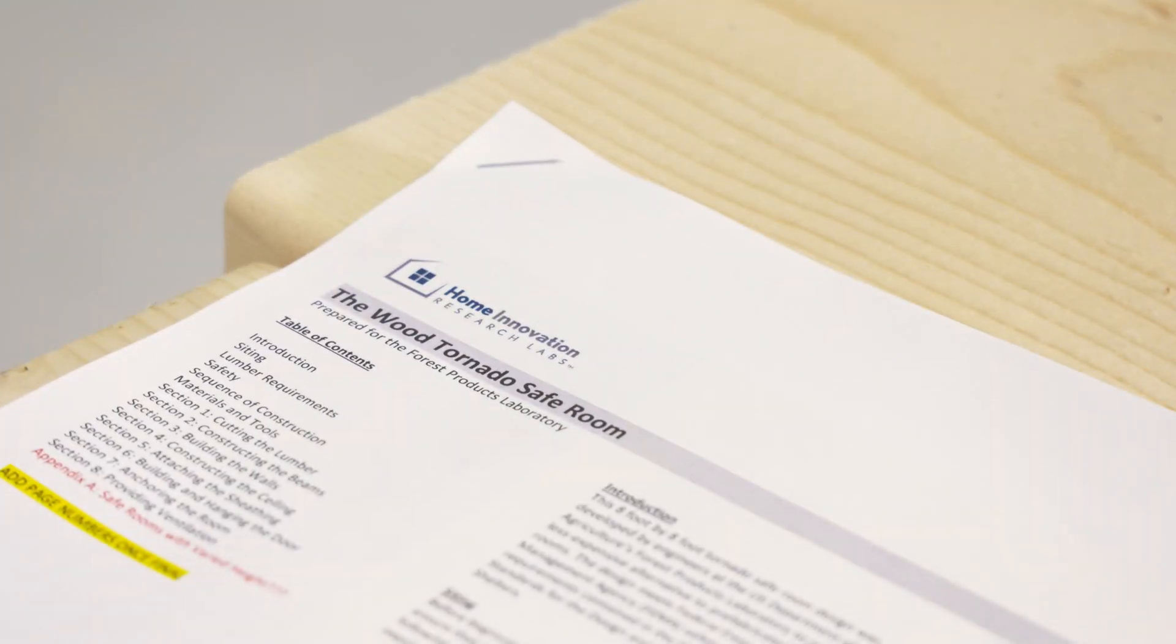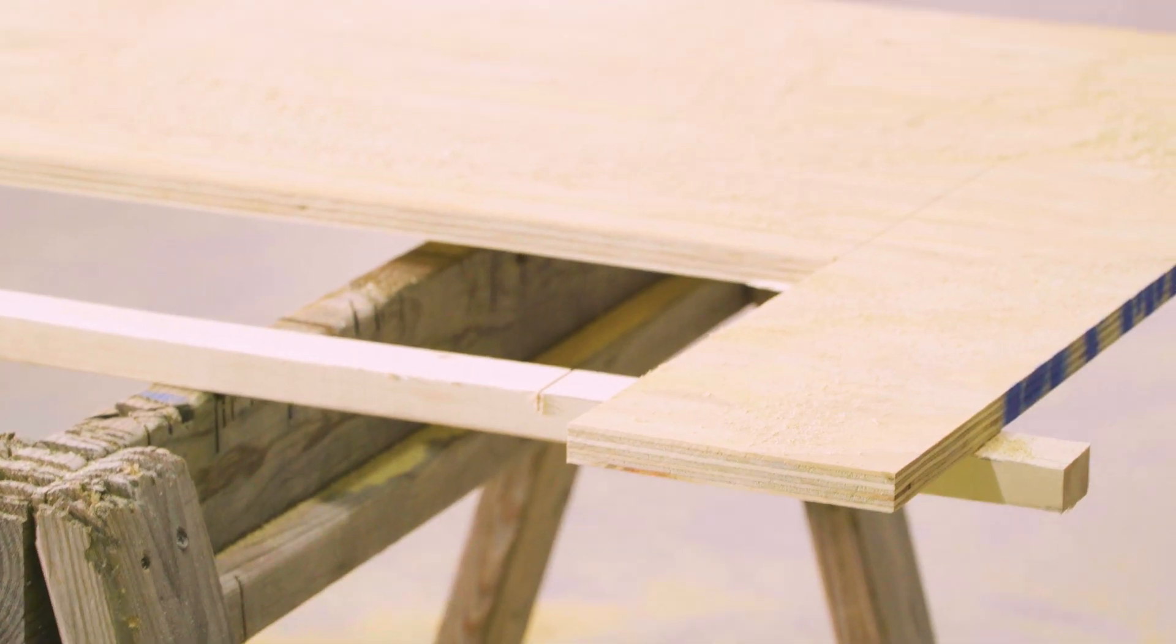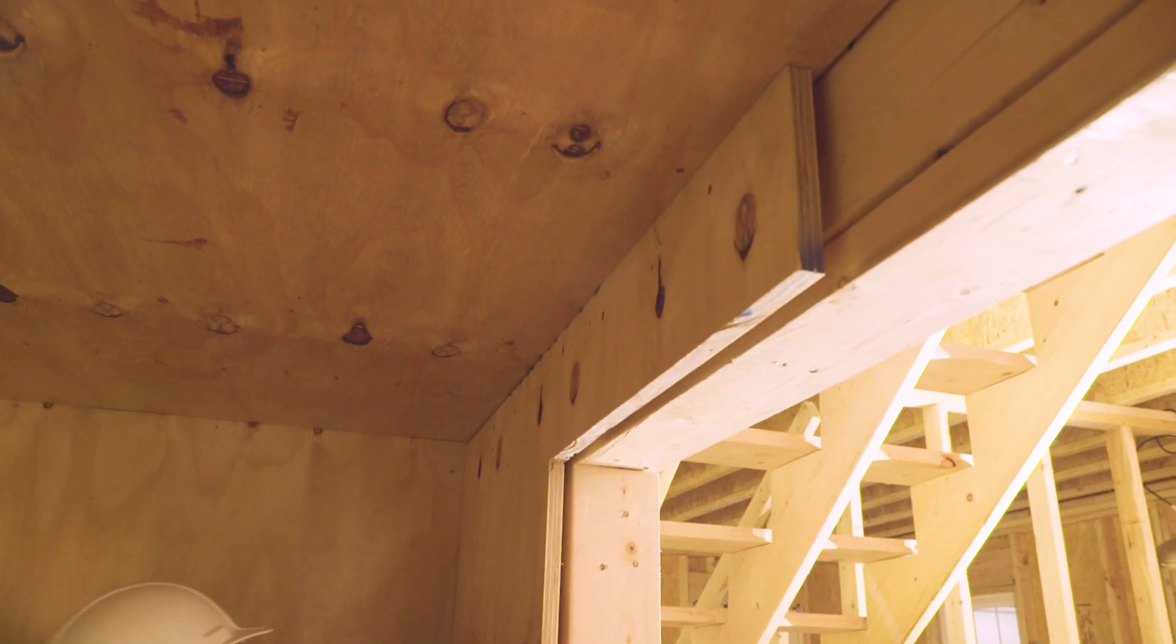Note that all of these dimensions are included in the accompanying construction guide. The sheets that will cover the door wall must also include a cutout for the entrance.